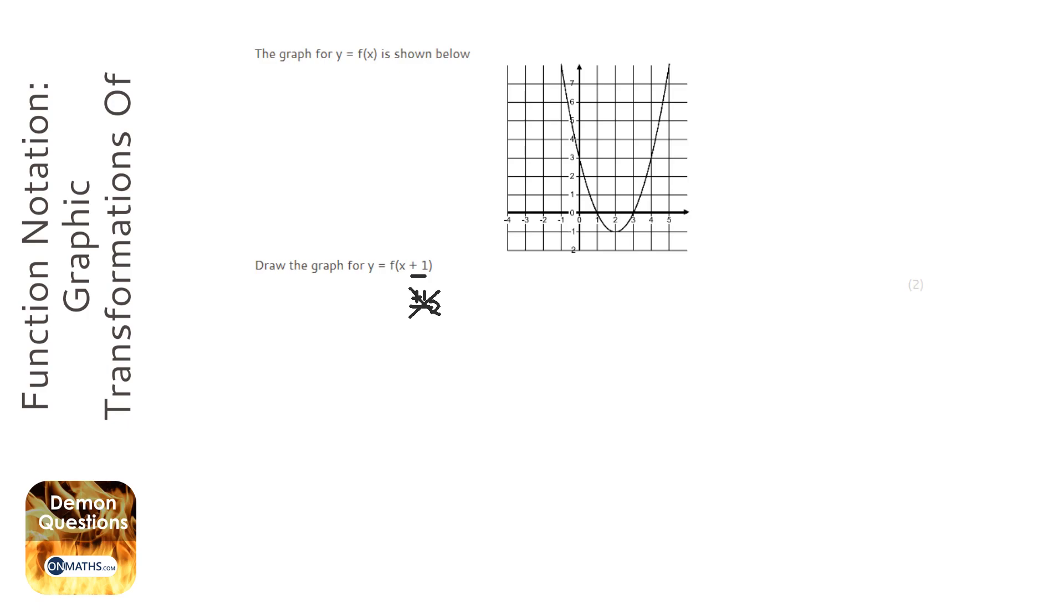But it always does the opposite of what you think inside the bracket. So a plus one will actually move it one place to the left, so actually subtract one from each of the x coordinates.